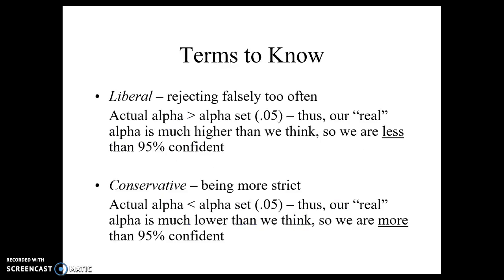A couple of terms first. You need to understand the idea of liberal and conservative. Liberal means that we are rejecting falsely too often — basically our real alpha is higher than we think, so we are less than 95% confident. We're allowing ourselves to find a difference and kind of relaxing the alpha a little bit. Conservative is the exact opposite — we're actually more than 95% confident, with stricter boundaries for finding significance. When looking at our alpha and our p-value, it stays the same; just know that the test itself is being more conservative or more liberal.